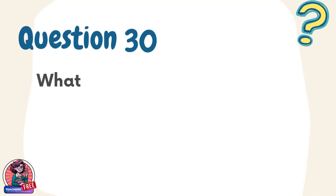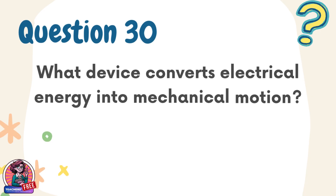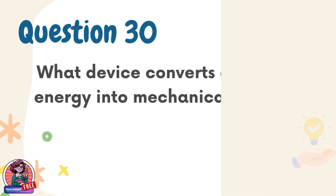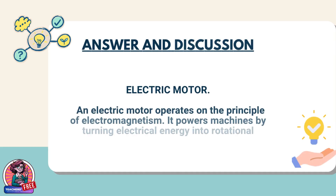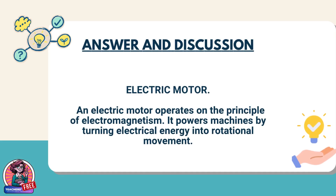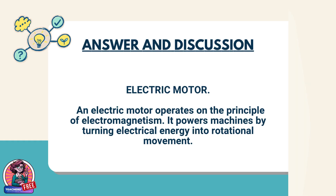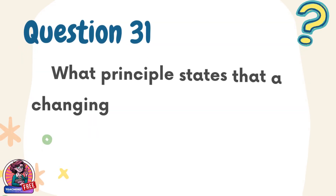Question 30. What device converts electrical energy into mechanical motion? Answer: electric motor. An electric motor operates on the principle of electromagnetism. It powers machines by turning electrical energy into rotational movement.